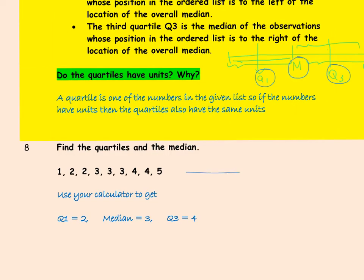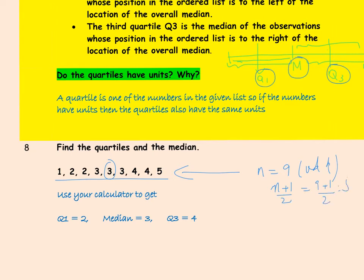Now let's look at this example. We have 9 numbers, so the sample size is 9. Since it's an odd number, we can find the middle number, which is the fifth number. We add 1 to 9 and divide by 2, which gives us 5. So the fifth number is the median.